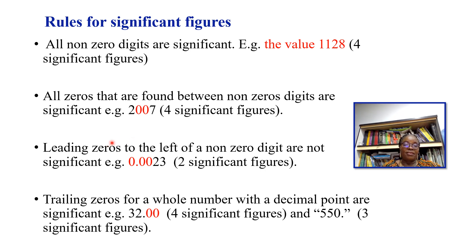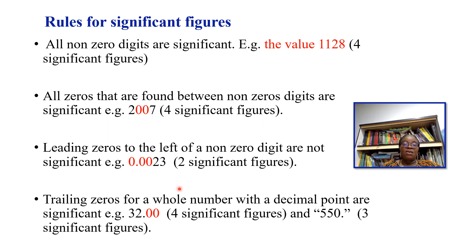Rule number four says trailing zeros for a whole number with a decimal point are significant. For example, 32.00 has two zeros after the decimal point, so all these values are significant — 32.00 has four significant figures. And 550. (with a decimal point) has three significant figures.